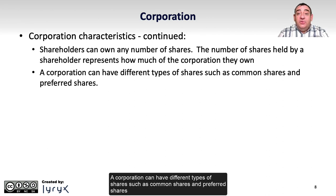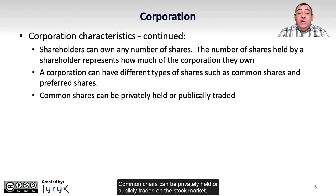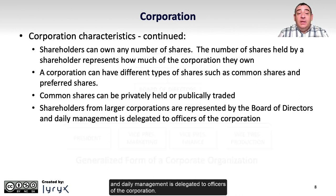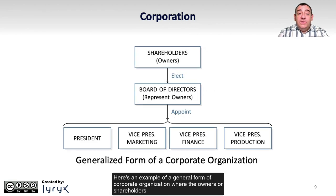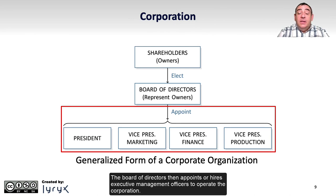A corporation can have different types of shares, such as common shares and preferred shares, and there can even be different classes of shares within those two categories. Common shares can be privately held or publicly traded on the stock market. Shareholders from larger corporations are represented by the board of directors, and daily management is delegated to officers of the corporation. The owners or shareholders, via a voting process, elect a board of directors to represent their interests, who then appoints or hires executive management officers to operate the corporation.